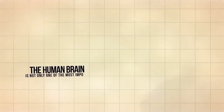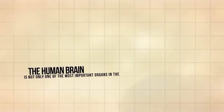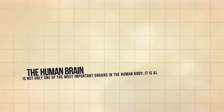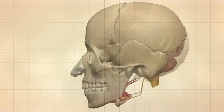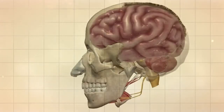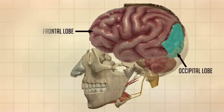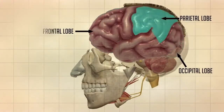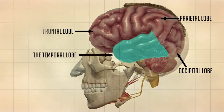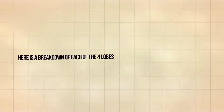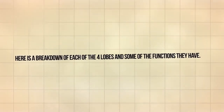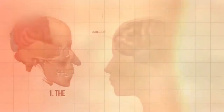The human brain is not only one of the most important organs in the human body, it is also the most complex. The brain is divided into four major sections known as lobes: the frontal lobe, the occipital lobe, the parietal lobe, and the temporal lobe — each with different locations and functions that support the response and actions of the human body. Here is a breakdown of each of the four lobes and some of the functions they have.